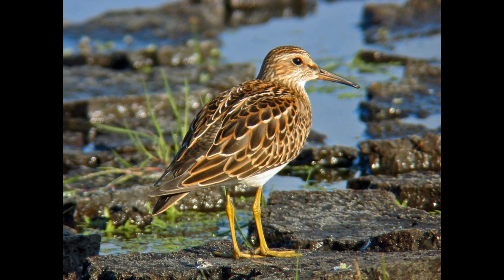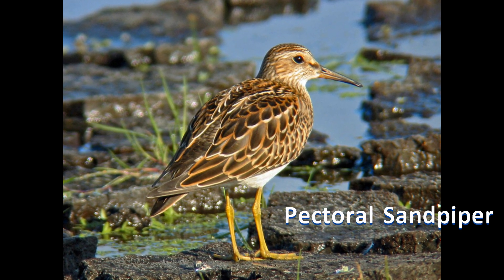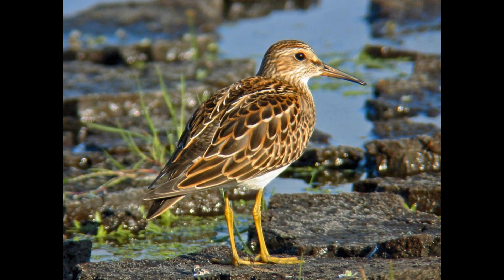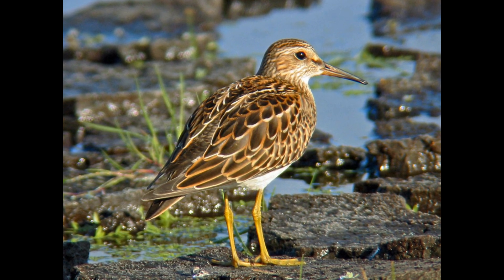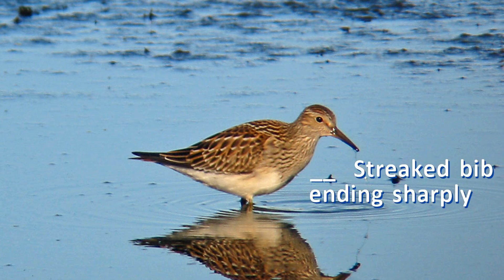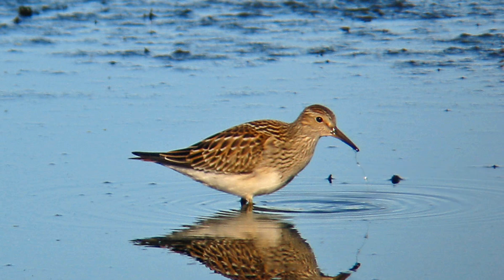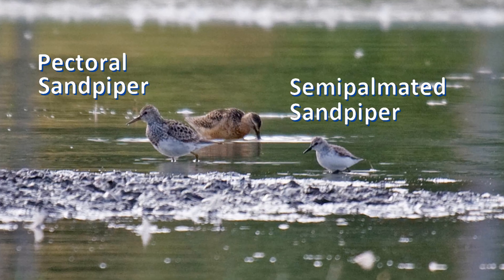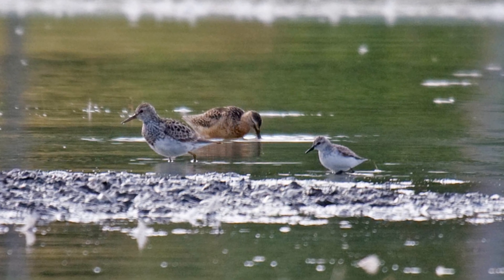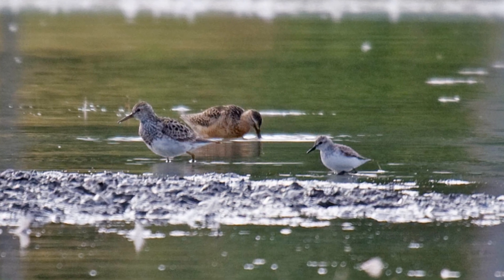The other smaller shorebird that may be confused with peeps is the pectoral sandpiper. It is much like a least sandpiper but much larger, with yellow legs. The breast is a heavily streaked bib ending sharply in a white belly. Male pectoral sandpipers are larger than females, but both are much larger than any of the peeps.